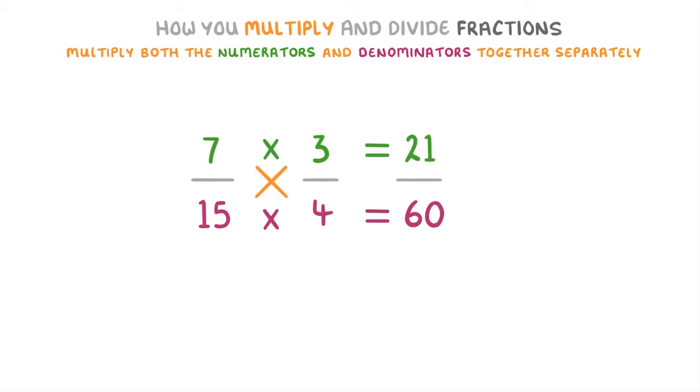Now this answer is entirely correct already, but in an exam you'll normally have to simplify your answer, which we can do by dividing the top and bottom of our fraction by the common factor of 3, which will simplify it to 7 over 20.